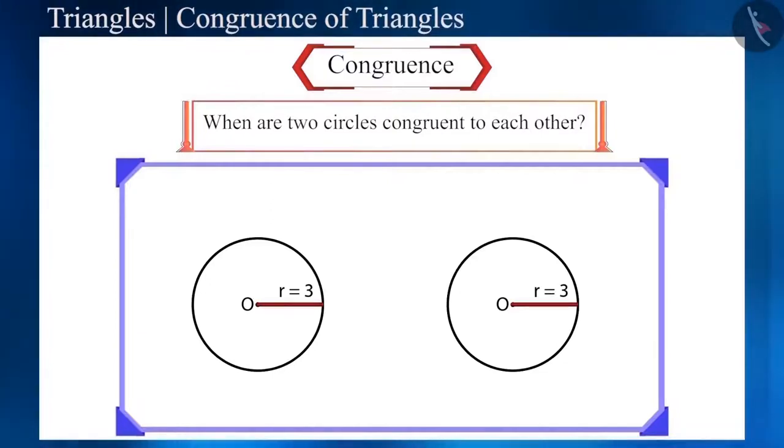Circles drawn with the same radius are congruent to each other, that is, the congruency of a circle depends on the radius.